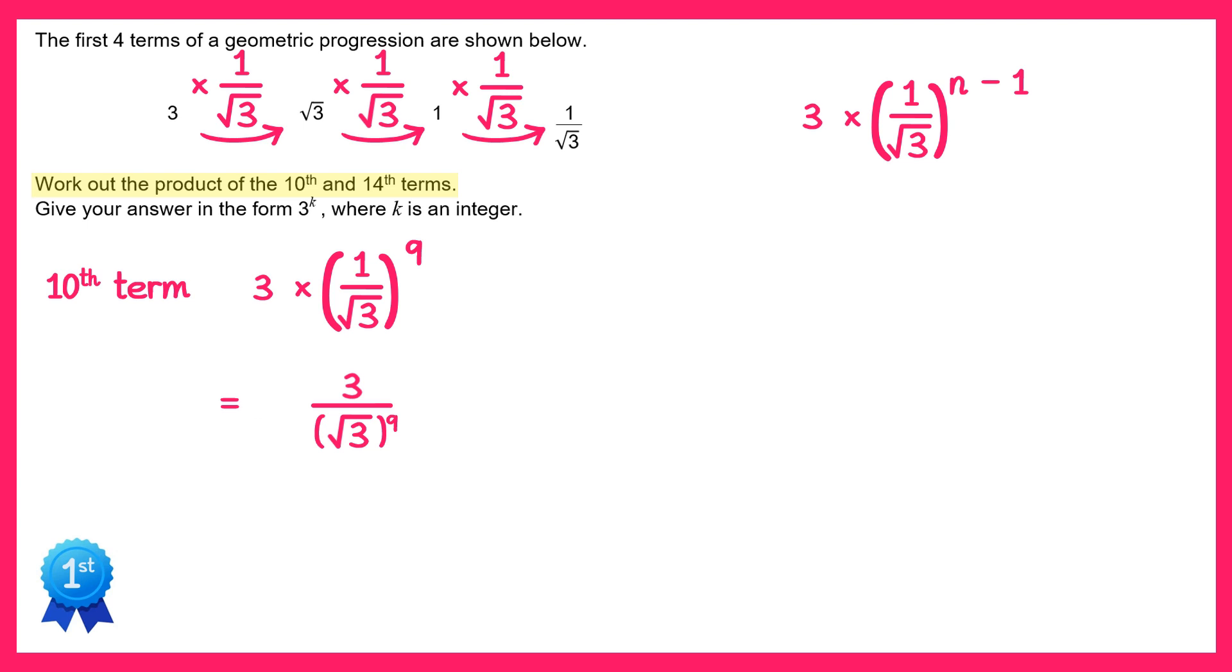So we have 3 on the top which is 3 to the power 1. And on the bottom we have square root 3 to the power 9. Now square root 3 could also be written as 3 to the power 1 half. And we have this in a bracket raised to the power 9. When you have brackets like this you multiply the indices so we just need to do 1 half times 9, which is 9 halves. So on the denominator there we could write 3 to the power 9 over 2. Now both the numerator and denominator are powers of 3 and we're dividing them so we can use the division law which means we subtract the indices. So 1 take away 9 over 2 is negative 7 over 2.